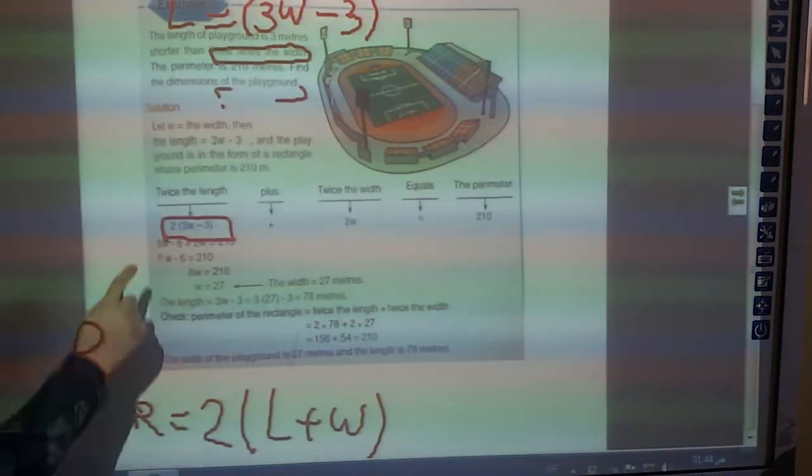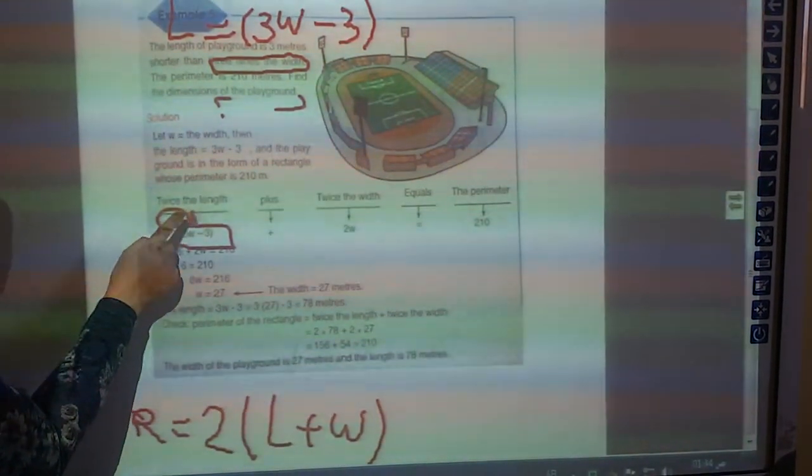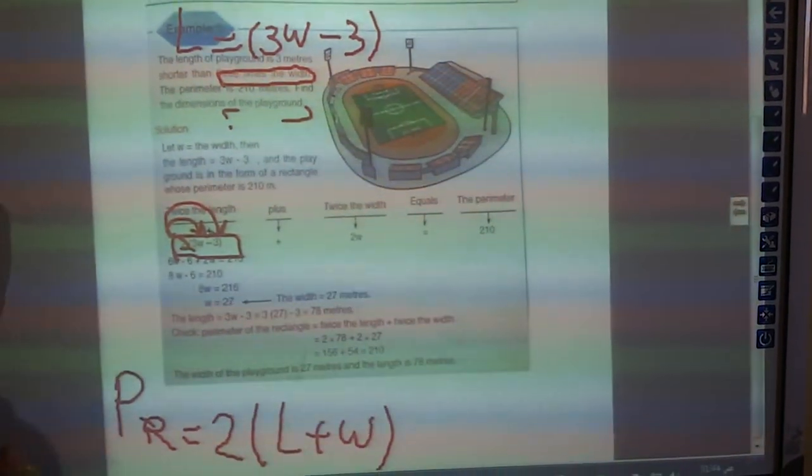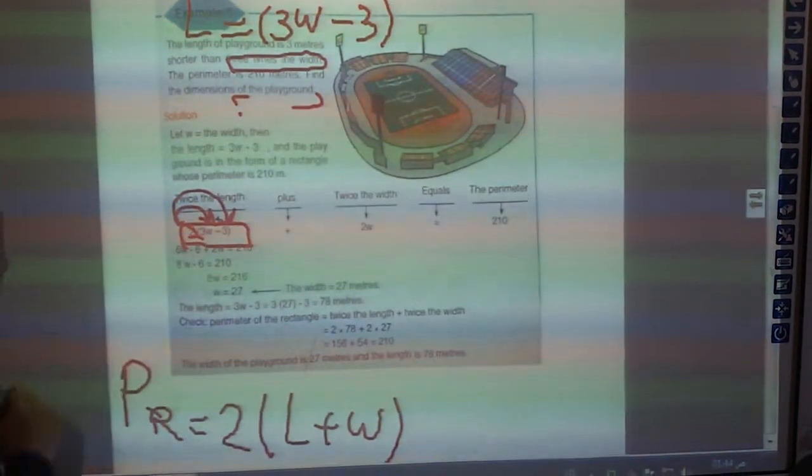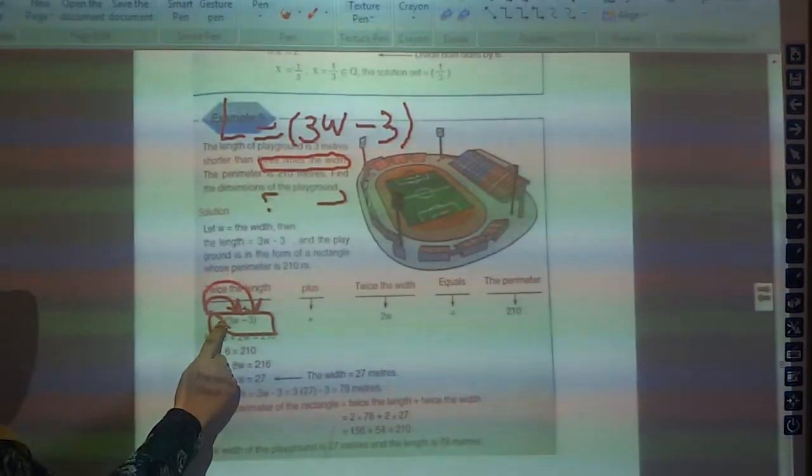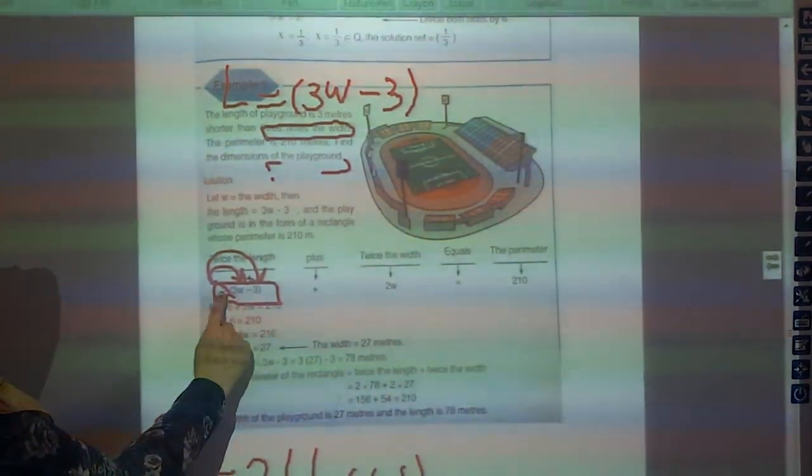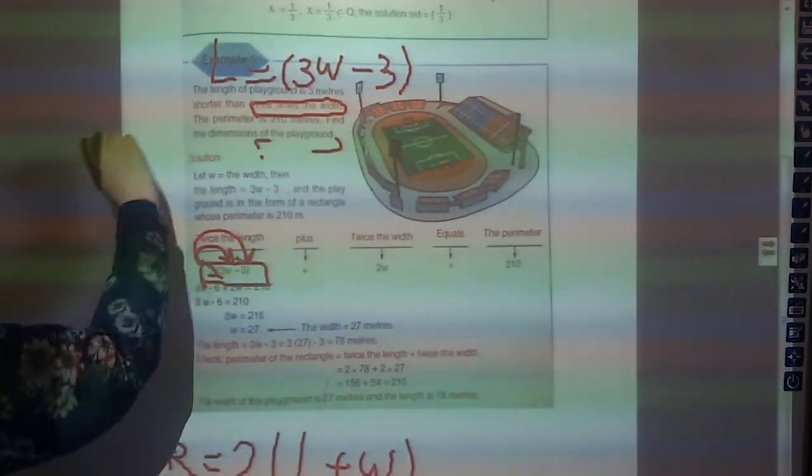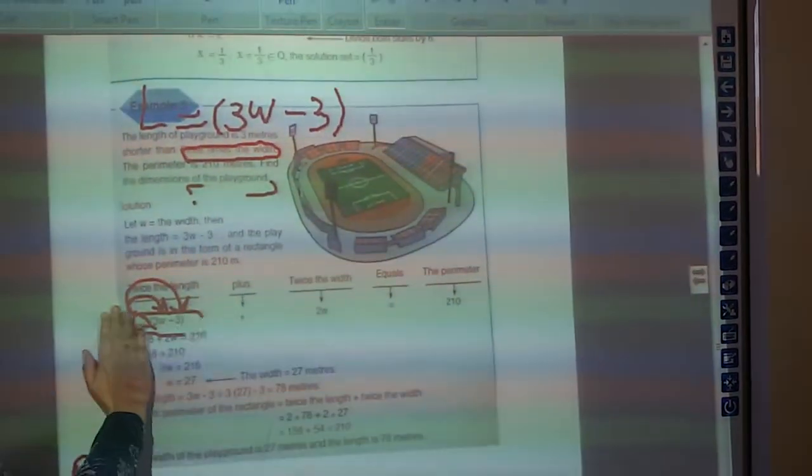How to solve it? You're going to make times, the 2 times inside the bracket. Here, 2 times 3, it will be 6. 2 times 3, it will be 6W minus 3 times 2 is another 6. Let's see it here.